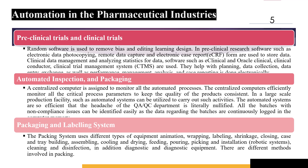Next, coming on to packaging and labeling systems. The packaging system actually uses different types of equipment including wrapping, labeling, shrinkage, closing, tray building, assembling, cooling, drying, picking, and installation by the help of robotic systems, in addition to diagnostic equipment.